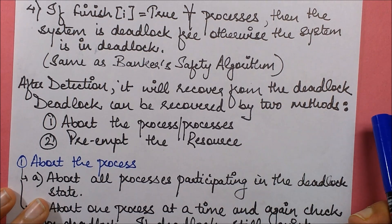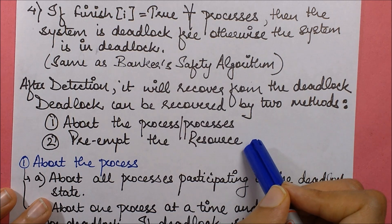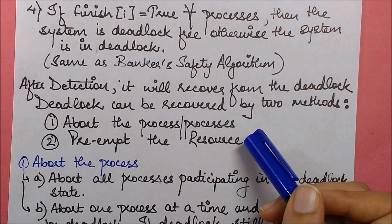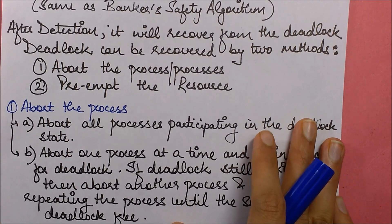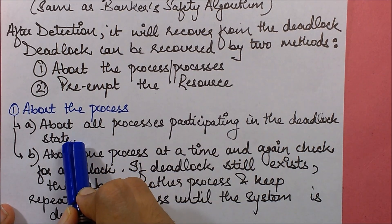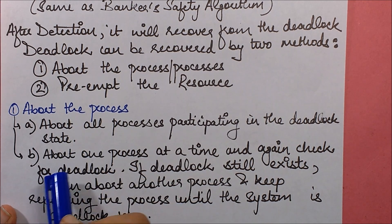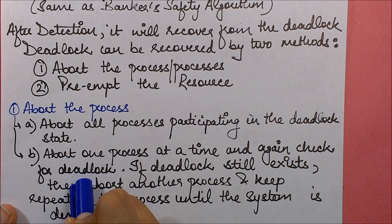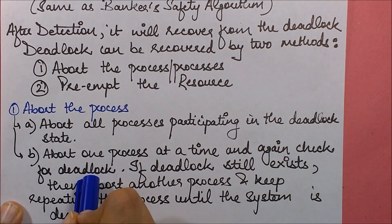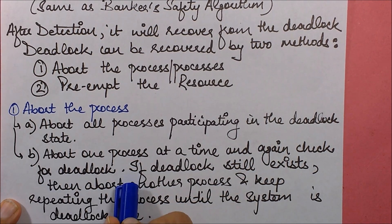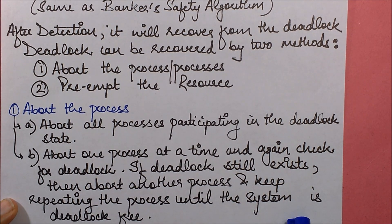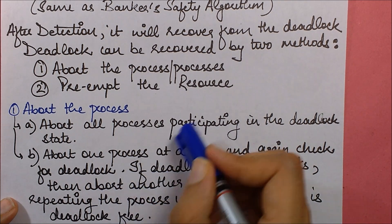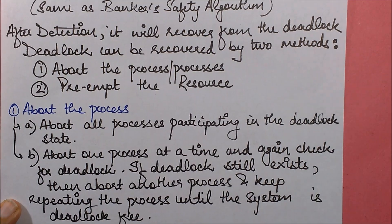After detection of deadlock, you need to recover from it. There are two ways: the first is about the process — you can abort all processes participating in the deadlock, or abort one process at a time and check for deadlock again. If deadlock still exists, abort another process and keep repeating until the system is deadlock-free.